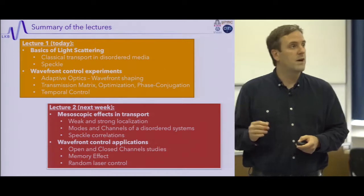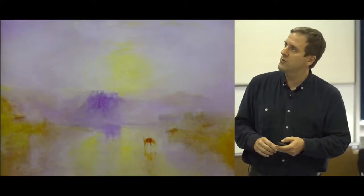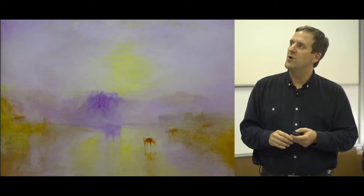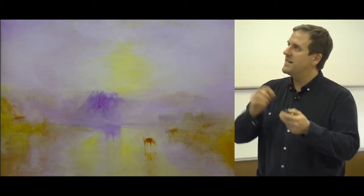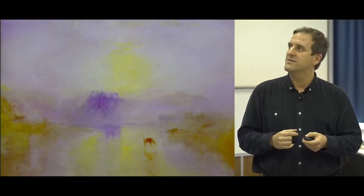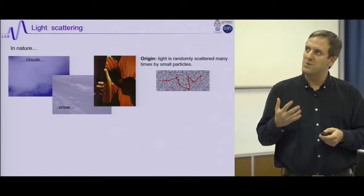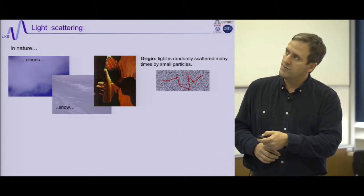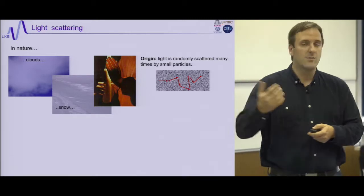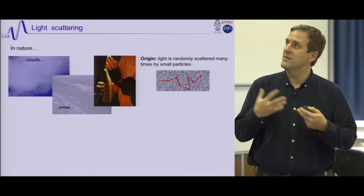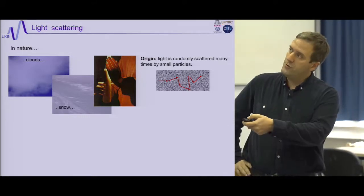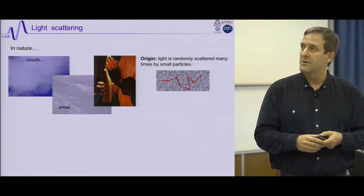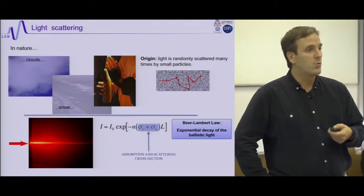For the first topic I want to discuss scattering. This is a picture by Turner where you can see all the subtle shades of color and light — that is really what scattering is about. Scattering is all around us: in clouds, snow, biological tissue. You can see the hands of a child letting some light pass through — that's a scattering phenomenon in tissue, due to the fact that the medium is heterogeneous, so light doesn't travel in a straight line but follows a very complex path.